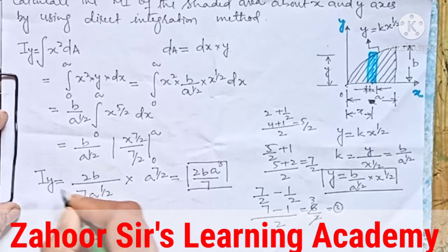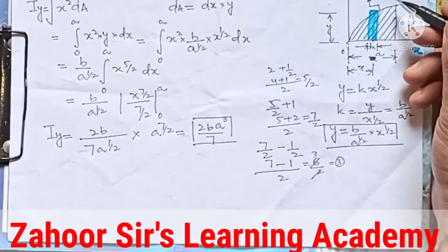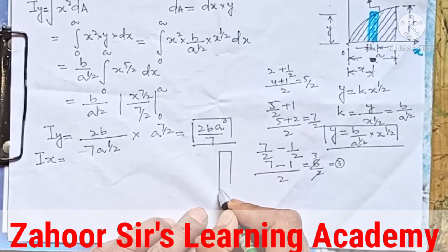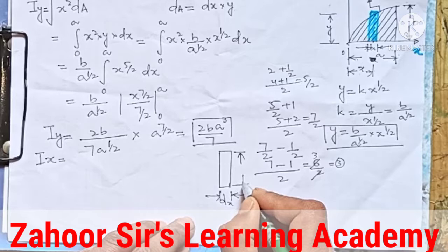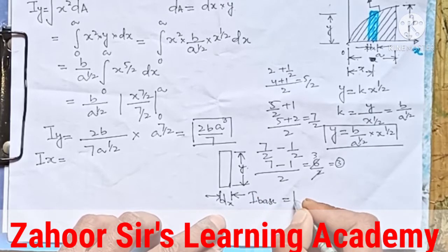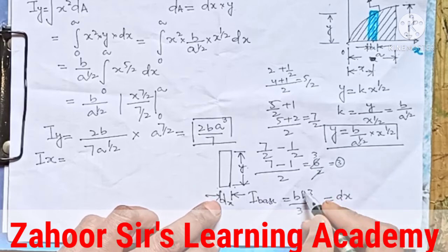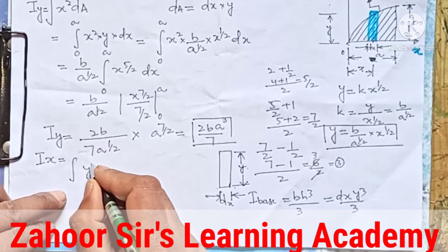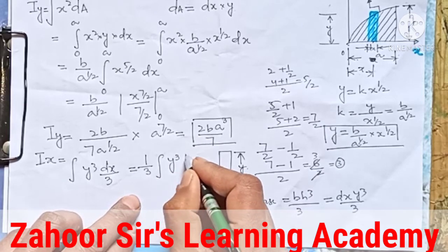Now we'll find the moment of inertia of the shaded region about the XX axis. As done in the previous case, taking the elementary strip separately — width is dx and height is y — we use the formula: moment of inertia about the base = bh³/3. Here b = dx and h = y, so dI = dx · y³ / 3. Integrating: Ixx = (1/3) · integral of y³ dx.